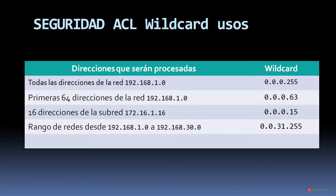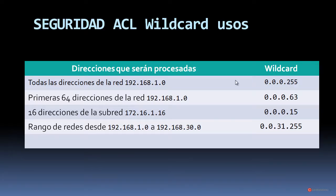En esta diapositiva vamos a revisar algún uso más de la implementación de esas máscaras Wildcard. Por ejemplo, para el filtrado de una dirección de red en concreto, todas las direcciones de la 192.168.1.0 de clase C, con máscara de subred 255.255.255.0, para revisar todas esas direcciones desde la 0 hasta la 255 deberíamos utilizar la máscara Wildcard 0.0.0.255. Se respetan los primeros octetos a 0 pero se van a revisar todas las direcciones del último octeto.